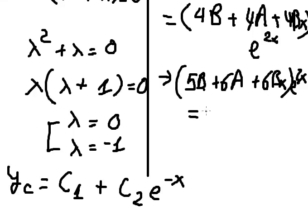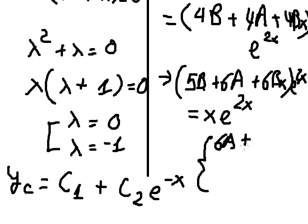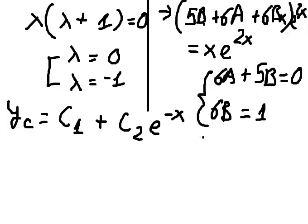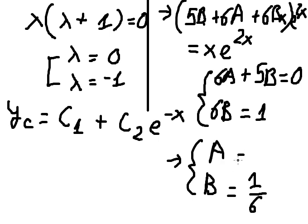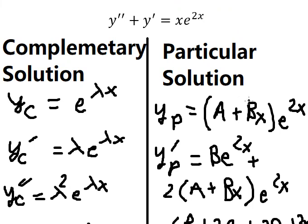This equals s times e to the power of 2s. Comparing coefficients: we see we only have s on the right side, so 5b plus 6a equals zero, and the coefficient of s gives 6b equals one. Solving: b equals one over six, and a equals negative five over 36.